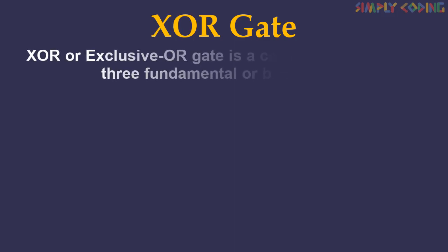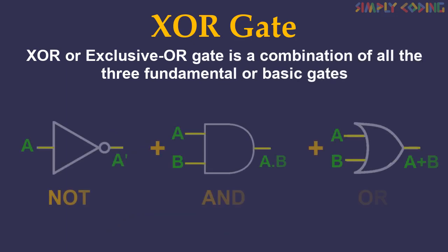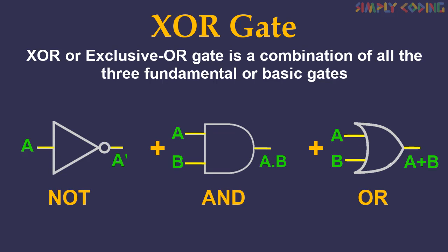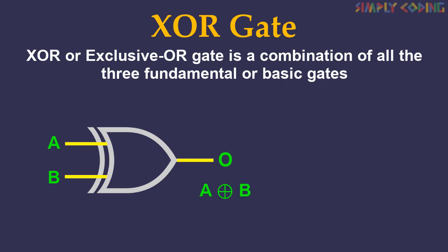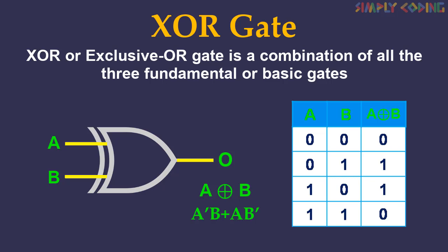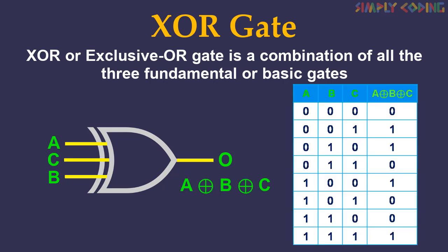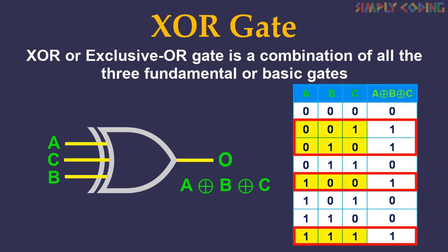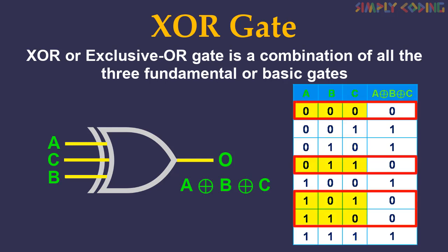Now we will see XOR gate. XOR, or exclusive OR gate, is a combination of all three fundamental or basic gates. This gate is drawn like this. XOR operation is shown using an encircled plus sign. It gives a boolean equation of (a bar · b) + (a · b bar). If you see the two-variable truth table, it gives an output of 1 if an odd number of inputs are 1, otherwise it gives 0. Likewise, for three variables, it results in 1 if the input bit pattern contains an odd number of 1 signals. The output is 0 for an even number of 1 signals.